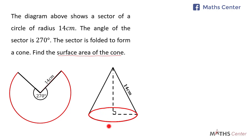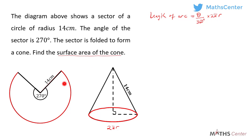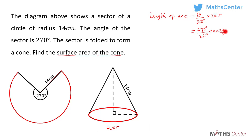The circumference of the circular base of the cone is given by the formula 2πr, where r is the radius of the circular base. The length of the arc of the sector is given by the formula (θ/360°) × 2πr, where r is the radius of the sector and θ is the angle of the sector. Substituting the values: (270/360) × 2 × (22/7) × 14 = 66 centimeters.